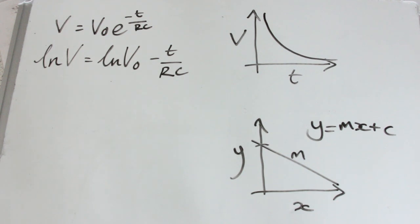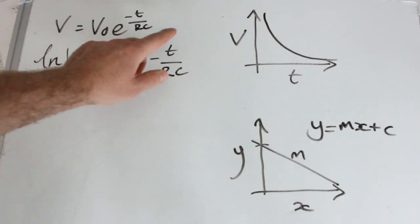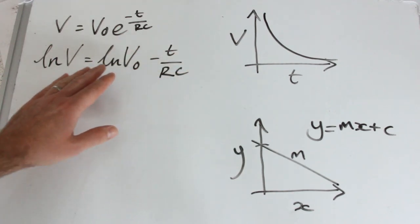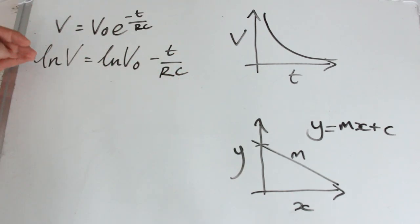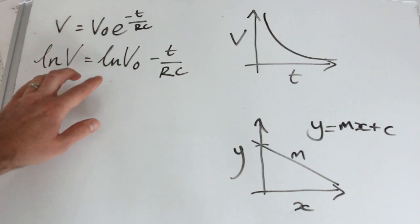Okay, and that gives us that equation there. So that is always the first step. If you need to rearrange for any one of these symbols here, you need to just take your natural log and you always get that, regardless of what V or V0 are.